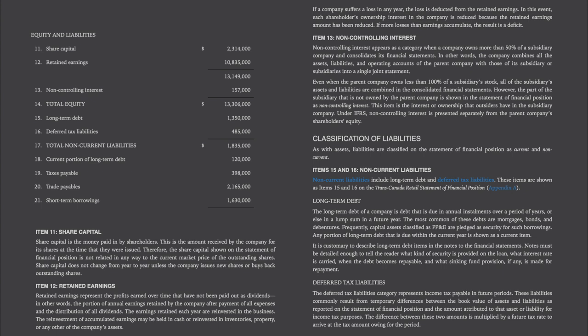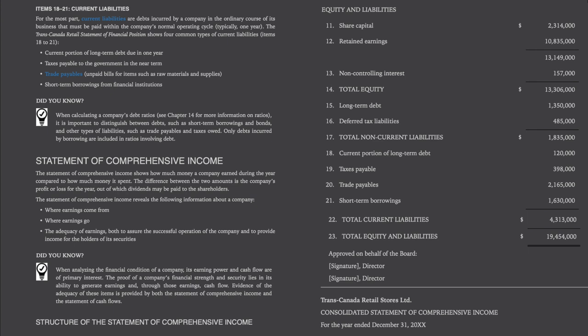The difference between these two amounts is multiplied by a future tax rate to arrive at the tax amount owing for the period. Items 18 to 21 are current liabilities — debts incurred by a company in the ordinary course of business that must be paid within the company's normal operating cycle, typically one year. The four current liabilities are: the current portion of long-term debt due in one year; taxes payable to the government in the near term; trade payables, such as unpaid bills for raw materials and supplies; and short-term borrowings from financial institutions. When calculating a company's debt ratios, it is important to distinguish between debts such as short-term borrowings and bonds and other types of liabilities such as trade payables and taxes owed — only debts incurred by borrowing are included in ratios involving debt.